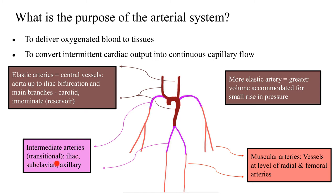The second level of arteries are the intermediate arteries, also known as the transitional arteries, which consist of the iliacs, the subclavians, and the axillary arteries. The third level are the muscular arteries, which have more muscular tissue in their wall as against elastic tissue. Examples are the radial artery and the femorals.